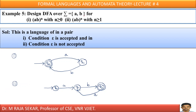Design a DFA over Σ = {A, B} for AB^N with N ≥ 0, and also for AB^N with N ≥ 1. In the first case, N ≥ 0 means if N = 0, that is the null string; N = 1 gives AB; N = 2 gives ABAB, and so on. Since null string is allowed, epsilon must be accepted, so Q0 is kept as the final state. For A we go to Q1, then for B we return to Q0, accepting the string AB. In this manner, ABAB, ABABAB, and so on are all accepted.